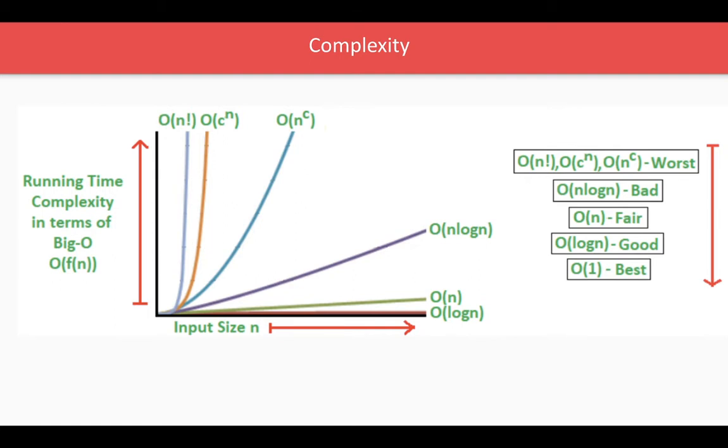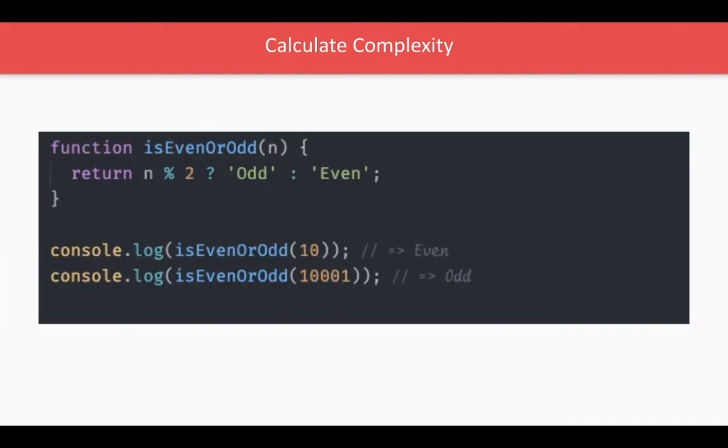It's worst because with the increase of data, time has increased fourfold, threefold. Simple example: whatever input you provide, it will take the same amount of time to evaluate what is even and what is odd. Simple complexity—it's O(1).